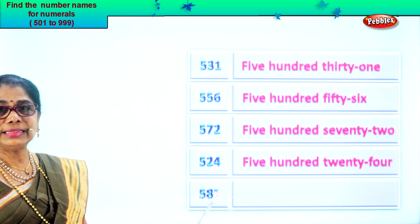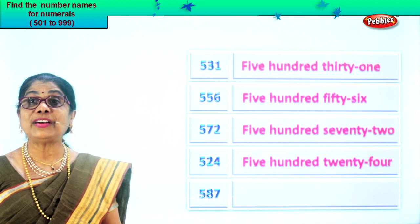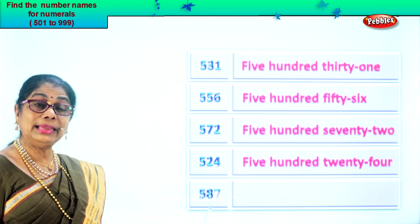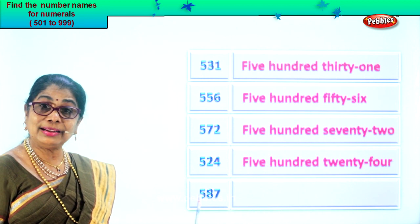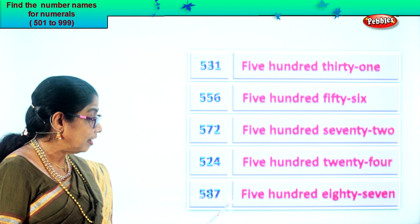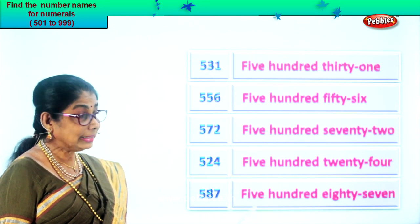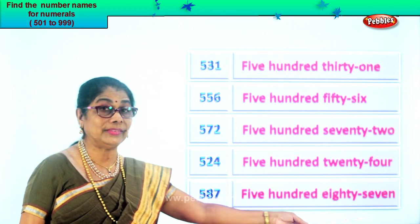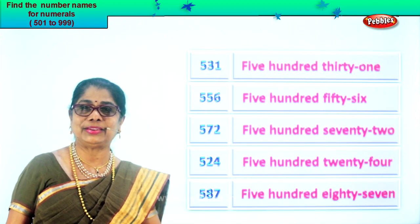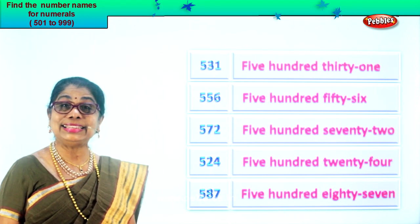Now here you have seven in the ones place, eight in the tens place and five in the hundreds place. Read: five hundred eighty-seven. So first we write five hundred, then we write eighty-seven. Eighty and seven — five hundred eighty-seven. Did you enjoy the exercise? Isn't it easy? Good.